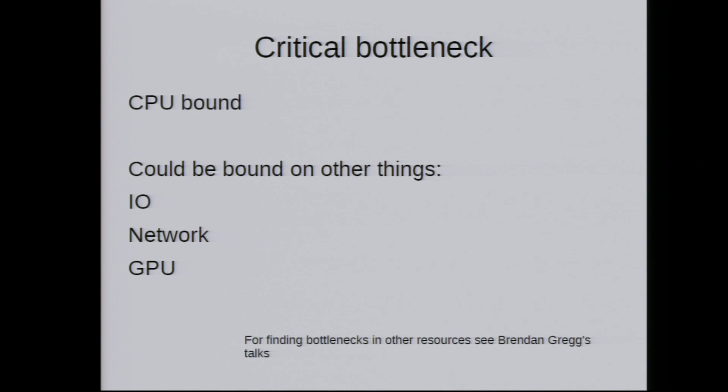Another key principle: know your critical bottleneck. It's not useful to optimize for something which is not holding you up. I'm mostly talking about CPU-bound workloads here. Before you start optimizing CPU a lot, make sure you're not bound on something else — it could be I/O, networking, or GPU. I'm really focusing on the CPU-bound case: your application is computing, not waiting on something, and executing instructions is what's holding it up.